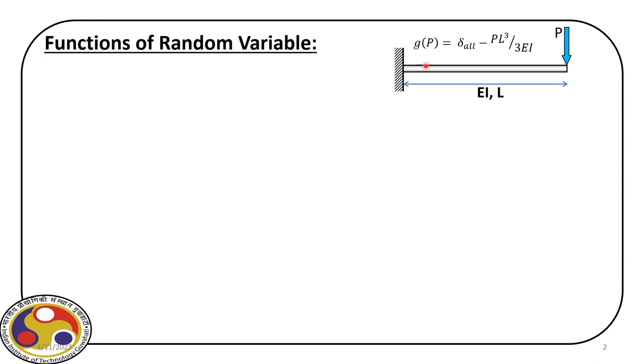We have a cantilever beam as you can see on your screen. This beam is exposed to a point load at the free end, and the material as well as sectional properties, also the geometry and length of this beam — these parameters are given. Now we design these kinds of structures in civil engineering and other engineering also. In design we use certain limit states or performance functions, which are of different types, either based on stress or forces or based on displacements.